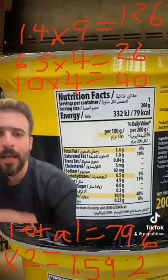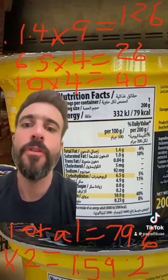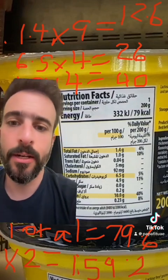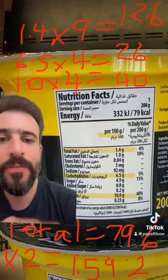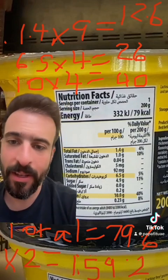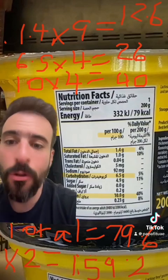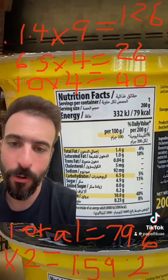Number two: there are nine calories for one gram of fat, four calories for one gram of carbs, and four calories for one gram of protein. You use those numbers to get a general idea and calculate your macros.